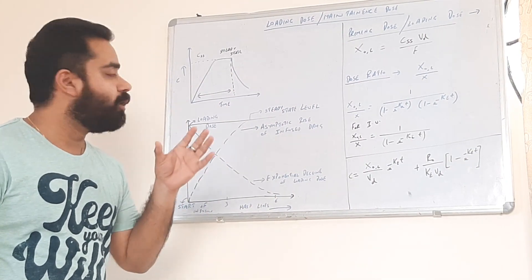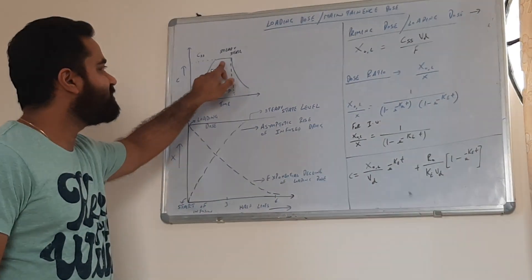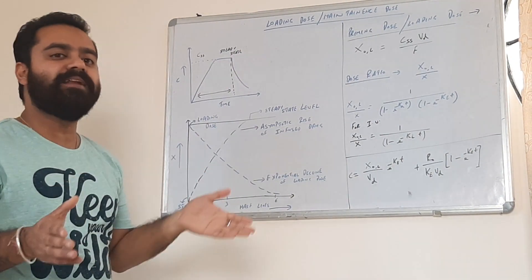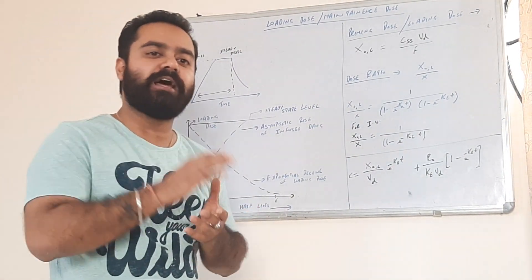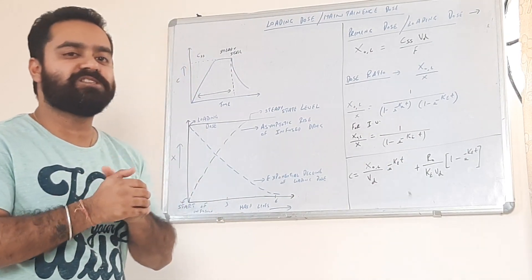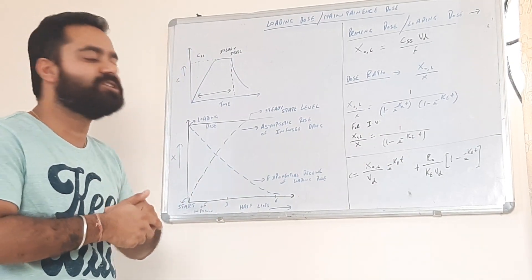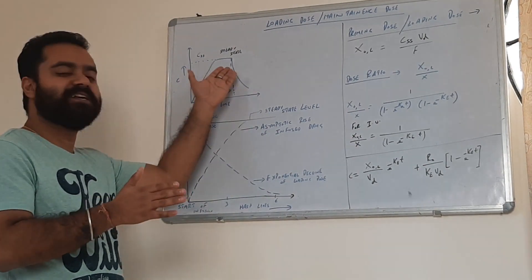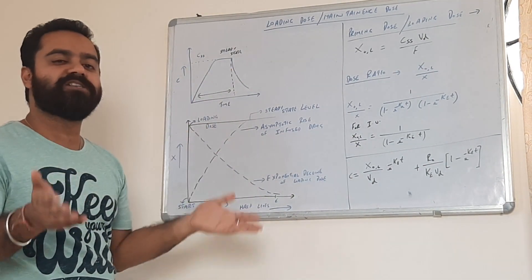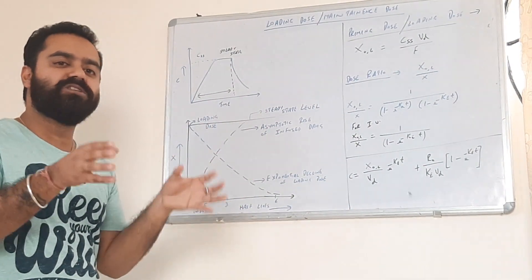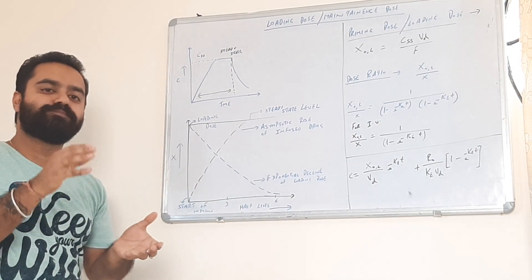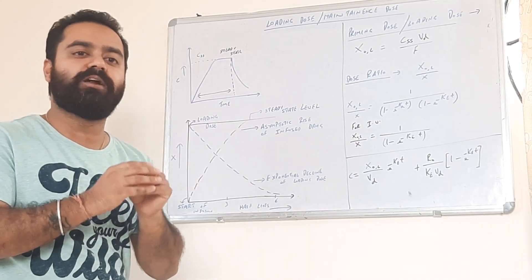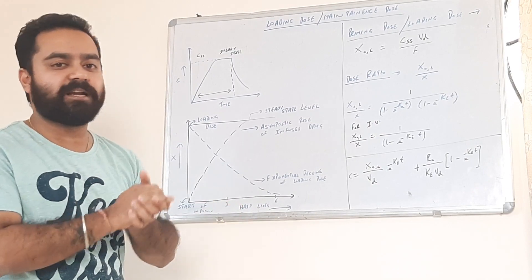The drug must reach the steady state concentration to be therapeutically active. Normally, it takes around 5 half-lives of the drug to achieve the steady state concentration or the plateau phase. Unless the steady state is reached, the drug is not going to show its activity, or the concentration is going to be below the minimum effective concentration — it is going to lie in the sub-therapeutic level.